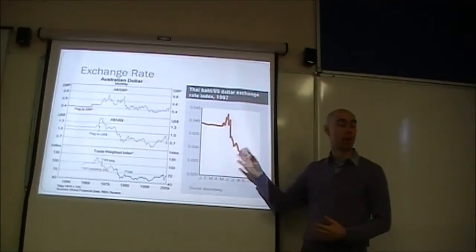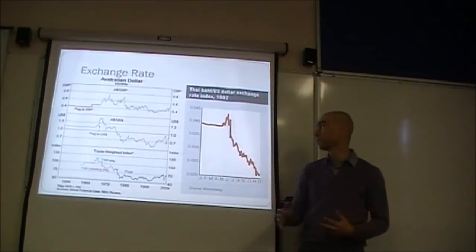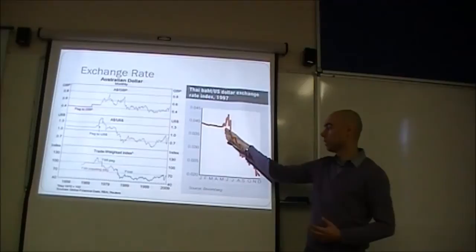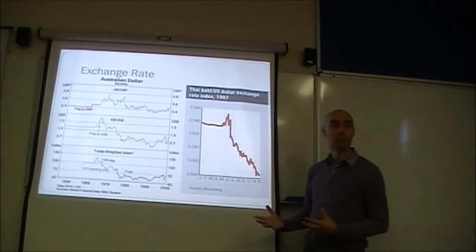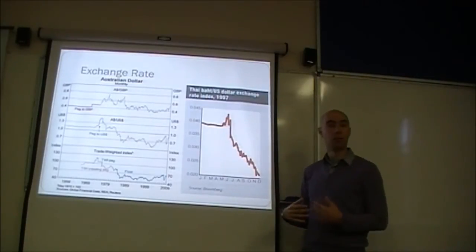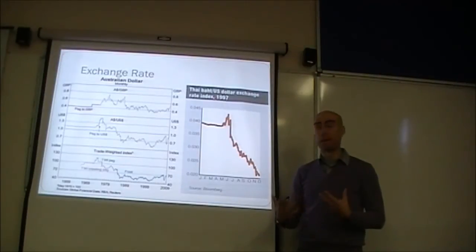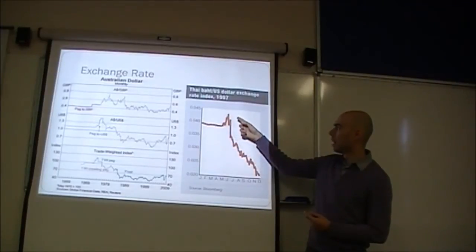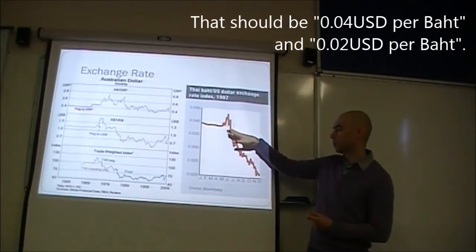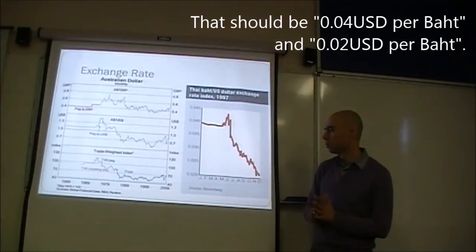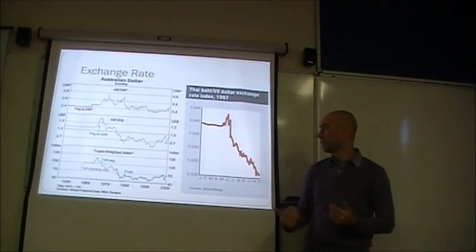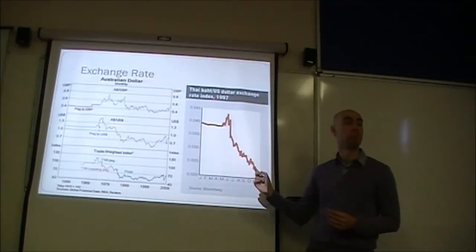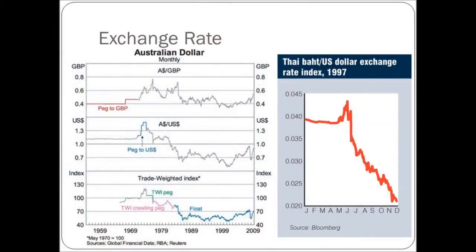This is an example of Thailand. Thailand was the first Asian economy to float its currency during the Asian financial crisis. It was fixed in the early part of 1997. They were required to float their currency as part of a bailout package by the IMF. And it went from about 0.04 baht per US dollar down to 0.02 baht per US dollar. It dropped by 50% in a matter of months.